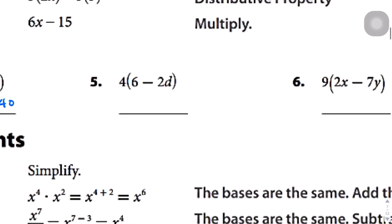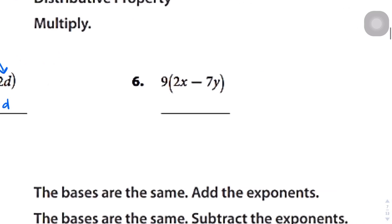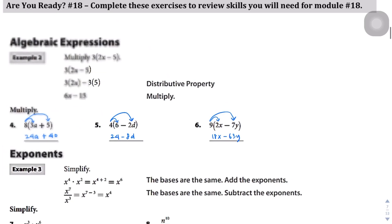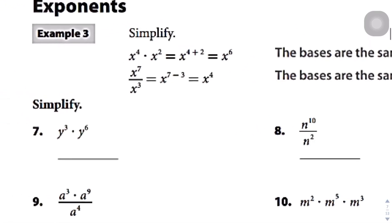Question 5: we distribute the 4 to each term. 4 times 6 is 24, and then 4 times negative 2d — keeping that sign — gives negative 8d, since 4 times 2 is 8 and the d stays attached. Question number 6: multiply the first term — 9 times 2x is 18x, since 9 times 2 is 18 and x stays attached to that coefficient. Then 9 times negative 7y gives negative 63y.